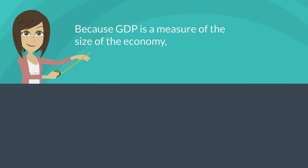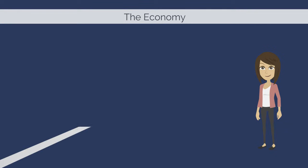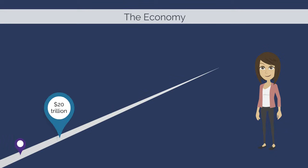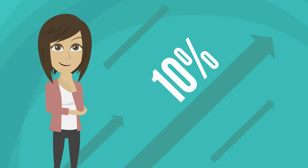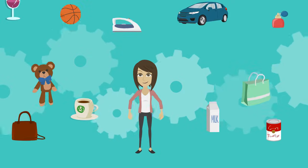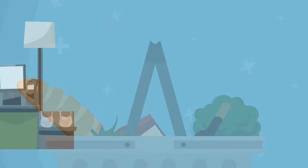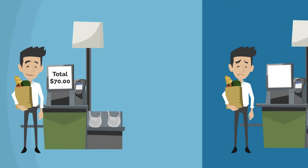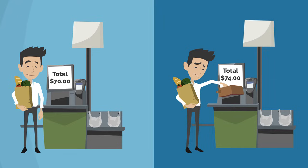Because GDP is a measure of the size of the economy, it can be useful for discussing how the economy is performing over time. If the economy at one point in time is $20 trillion and $22 trillion at a later point in time, a simple calculation tells you that nominal GDP increased by 10%. With this information, you might assume that the economy grew by 10%, meaning production of goods and services increased by 10%. However, there's a pretty good chance that prices changed over that time span, so some of that 10% growth might be a change in the prices of goods and services, meaning not all of the 10% increase in GDP represents an increase in the production of goods and services.